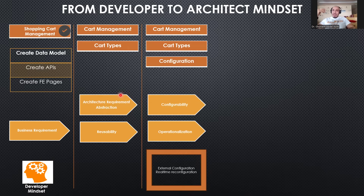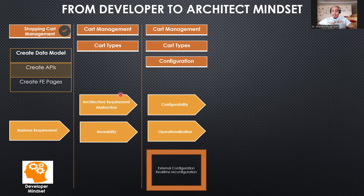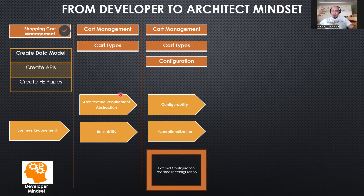What if you have external configuration but need to apply it to production immediately? You need to implement a real-time reconfiguration design pattern so that upon change of configuration, it is applied immediately to production. Implementing these correlated design patterns requires additional knowledge within the technical domain to think about large-scale solutions. This is suitable more for medium to large enterprise. So: abstraction increases reusability and decreases cost; configurability addresses operationalization through appropriate design patterns.